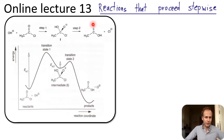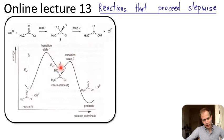In the energy versus reaction coordinate diagram, we start at the low energy of the reactants and then we overcome the activation energy for step one to produce this intermediate. Then in order to proceed, for this intermediate to go to the final product, we have to overcome a second activation energy that results in the products.